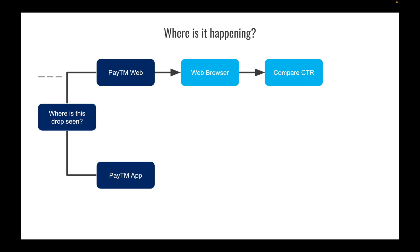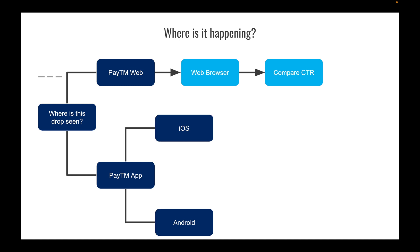For the Paytm app, we can bifurcate by whether the drop is happening on iOS or Android. This tells us if it's isolated to one platform. If it's only on iOS, we can tell the iOS team that their most recent upgrade is causing the drop. We can check the app version — for example, if version 0.1 had nominal bookings and version 0.2 dropped, then the change in 0.2 caused the issue.